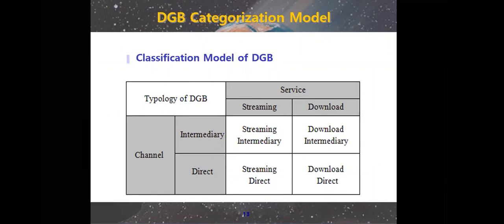DGB can be classified as one of four different types with the two sales channels on the vertical axis. And the DGB service types is the streaming and download with the channel as intermediary and direct. So it means this is a combination of all possible types.